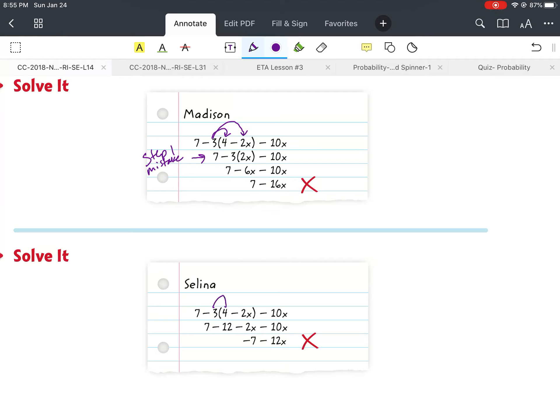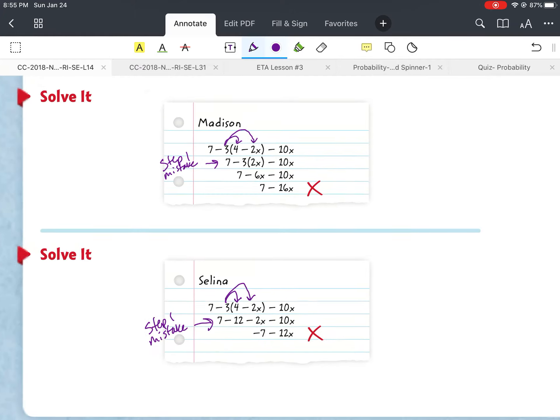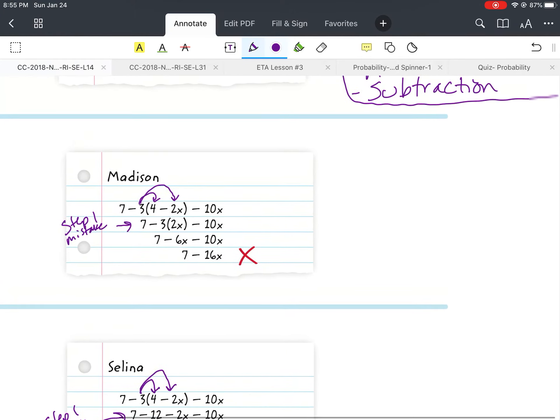Then if we look at Selena, we've got what the original equation is. Then the next step, she's got 7 minus 12. Well, she got 12 by doing the 3 times the 4. And then she's got minus 2x or subtract 2x. Well, she went wrong there because she should have taken the 3 times the 2x. So right there is where she made her mistake that indicated her getting the incorrect answer. Okay.